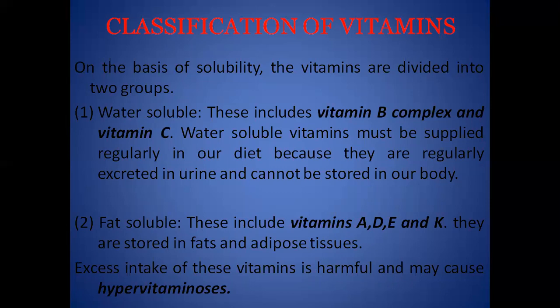Vitamins are classified into two categories based on their solubility — whether they are soluble in water or soluble in fats. Water-soluble vitamins include vitamin B complex, which is a series of vitamins: B1, B2, B3, B5, B6, and B12 — and vitamin C. Vitamins B and C are soluble in water. These water-soluble vitamins must be supplied regularly in our diet, since they are readily excreted in urine and our body is not able to store them.